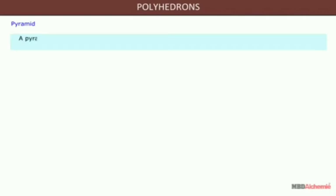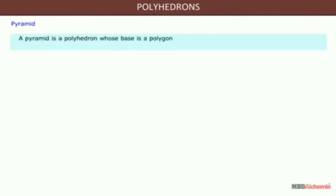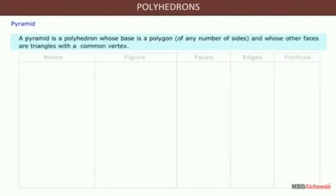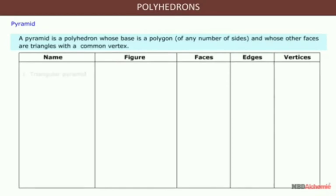Pyramid: a pyramid is a polyhedron whose base is a polygon of any number of sides and whose other faces are triangles with a common vertex.